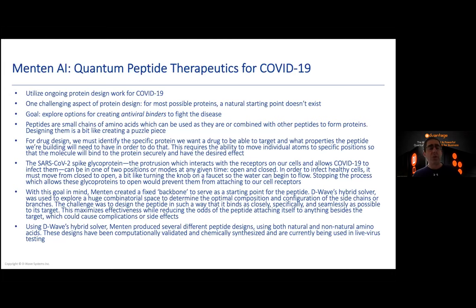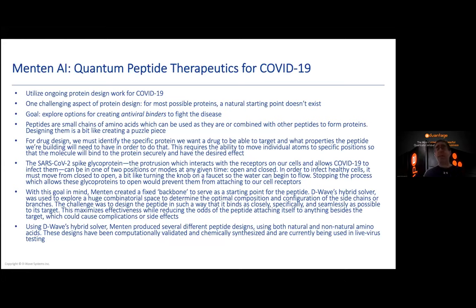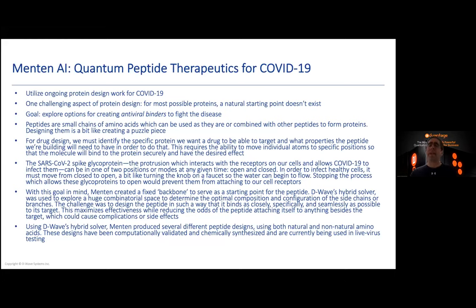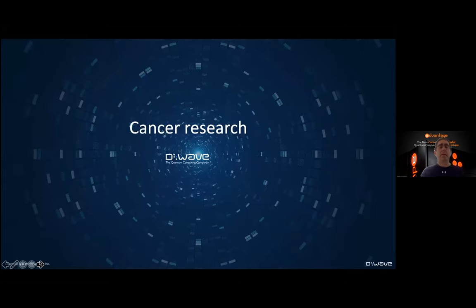Menten created a fixed backbone and, using the D-Wave quantum computer system, designed the peptide to bind as well as possible — efficiently, closely, and specifically, so that it attaches to the virus but doesn't attach to anything else or harm the body. Using the D-Wave hybrid solver, they produced several peptide designs. As far as I know, they've computationally checked them, synthesized them, and they're in testing on live virus. The vaccine is already out, so perhaps this will be more useful further down the road.